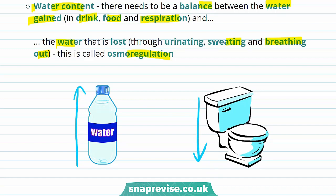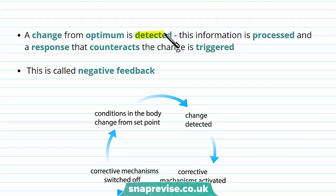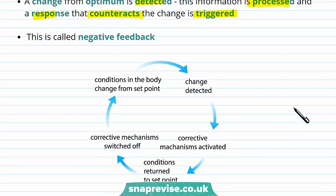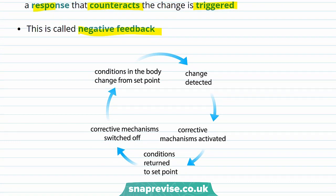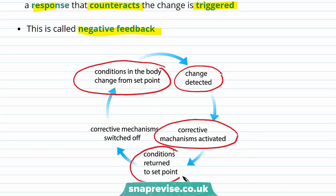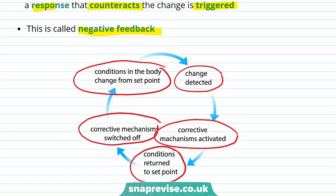So how do we counteract changes from the optimum? A change from the optimum is first detected. Then this information is processed and a response that counteracts the change is triggered — we call this negative feedback. For example, with temperature: conditions change from a set point, such as an increase in body temperature. This change is detected, corrective mechanisms are activated to decrease body temperature, and conditions are returned to the set point — around 37 degrees Celsius. After this, the corrective mechanisms are switched off, so your body temperature doesn't decrease too much. This cycle of events is negative feedback.